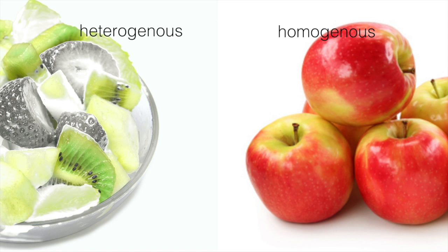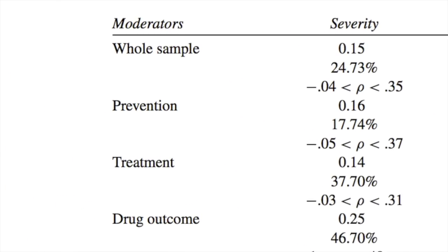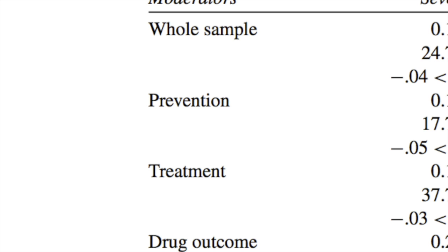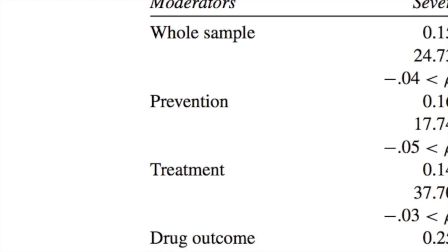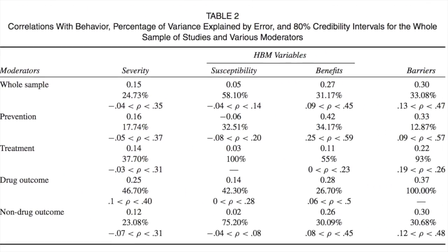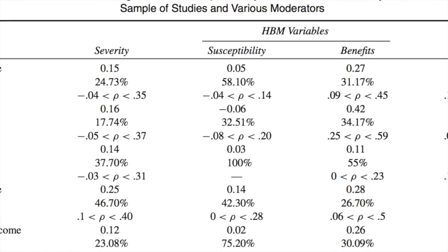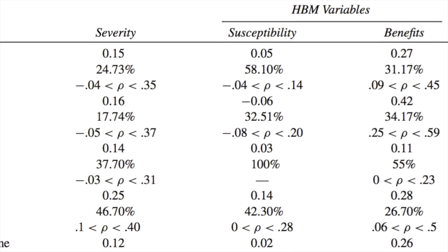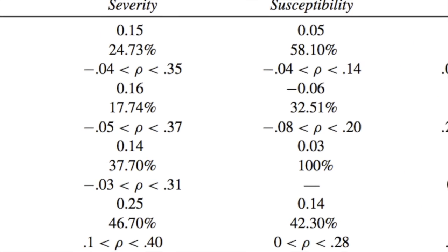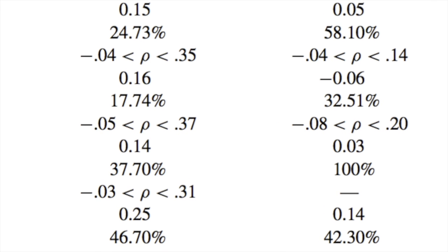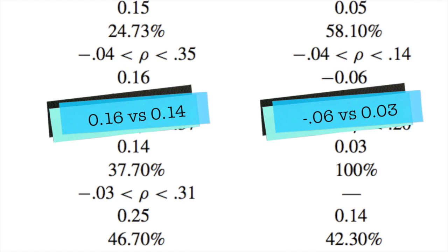Carpenter separated prevention-based behaviours — things like sunscreen or exercise — from treatment behaviours designed to stop an illness the person already had. Coming back to our table, we can see whether these heterogeneous effects became more homogeneous when looking at prevention versus treatment. For perceived susceptibility and perceived seriousness, the effect sizes are pretty much the same regardless of whether you're looking at a preventative or a treatment behaviour.